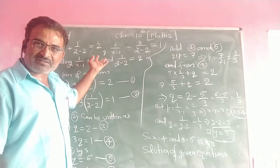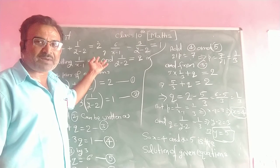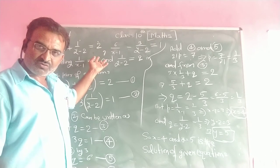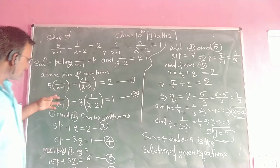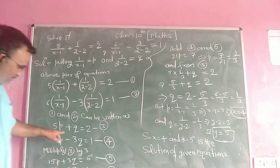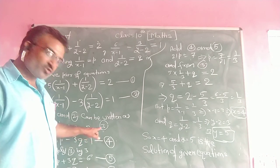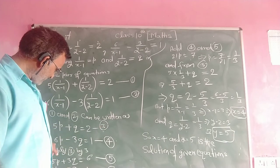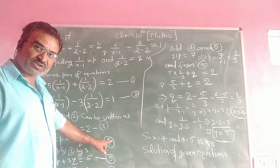Then, by substituting into the equations — 1 upon (x minus 1) equals p and 1 upon (y minus 2) equals q — we get the new linear equations: 5p plus q is equal to 2 (equation 3), and 6p minus 3q is equal to 1 (equation 4).